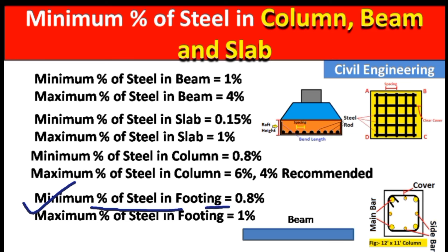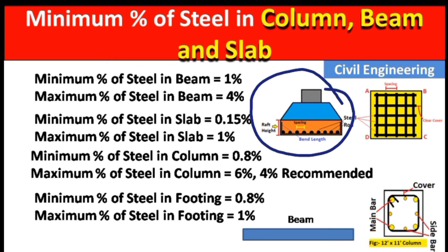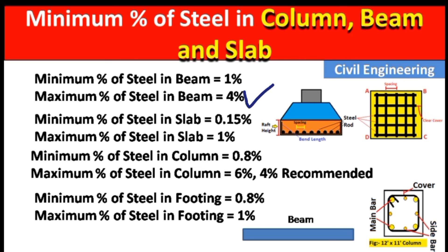The minimum percentage of steel in a footing should be 0.8 percent and the maximum percentage of steel in a footing should be one percent. So for a footing below ground, the steel can range from a minimum of 0.8 percent to a maximum of one percent.